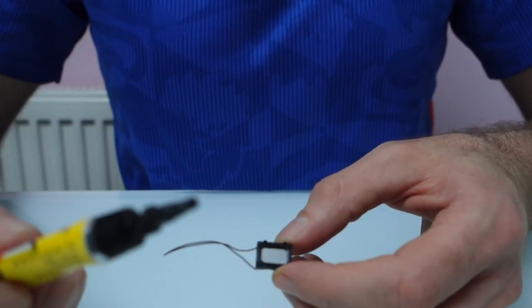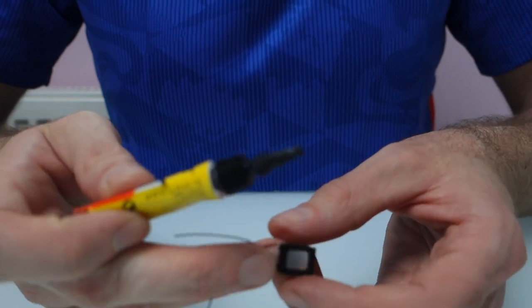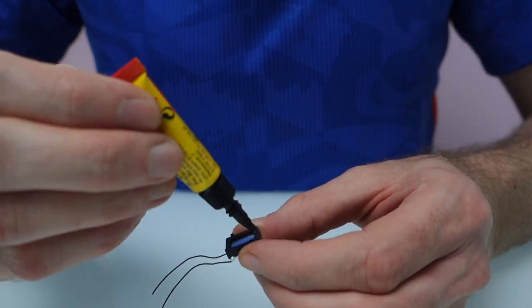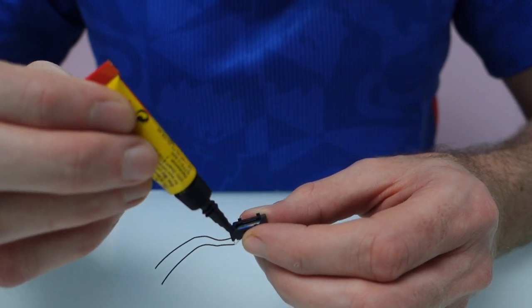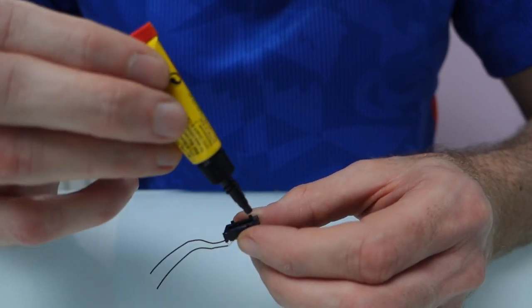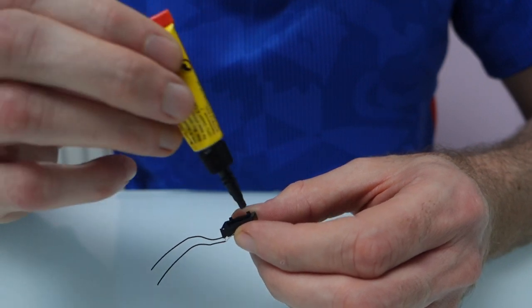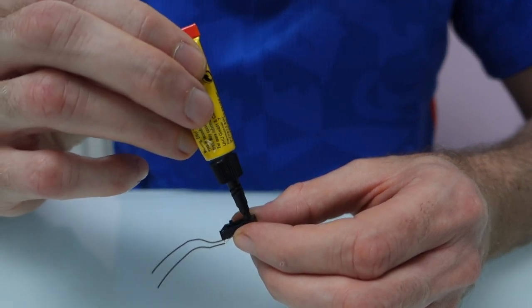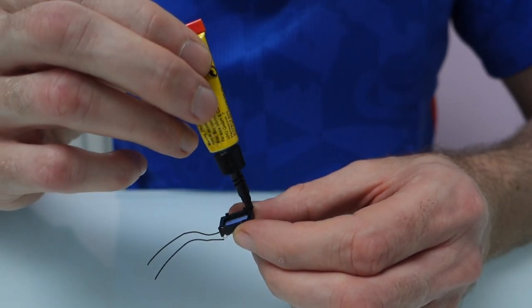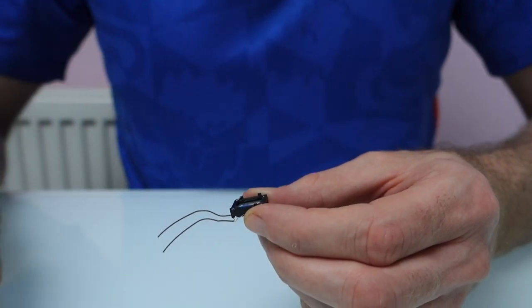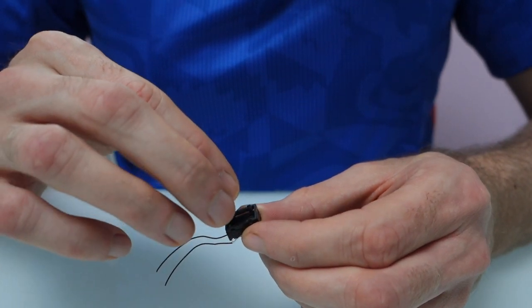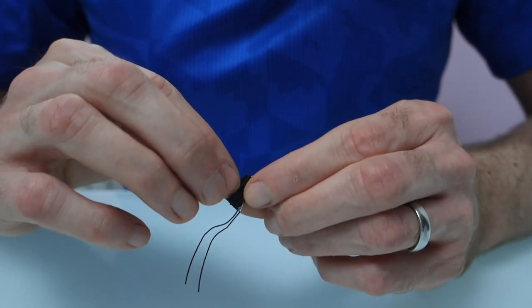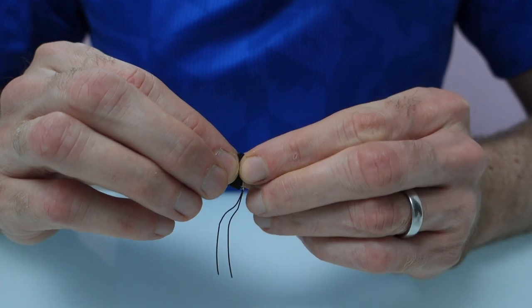So this is how I build them. Some people might do them different, but what I do is I just put a little bit of superglue on each corner, and this is really just to hold it.